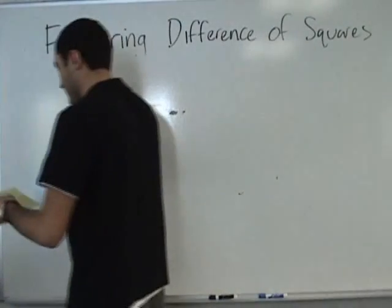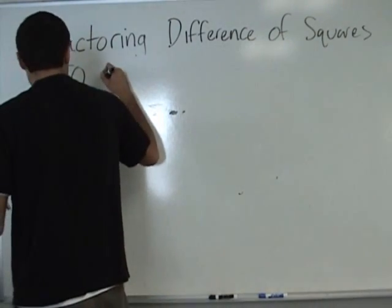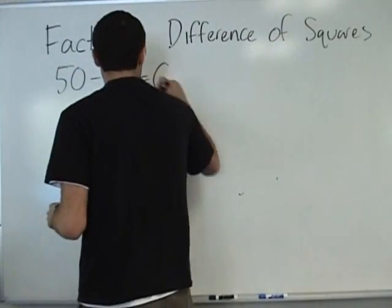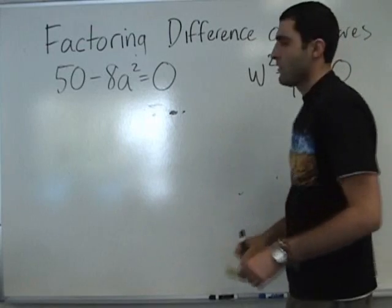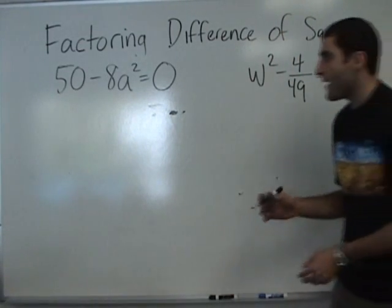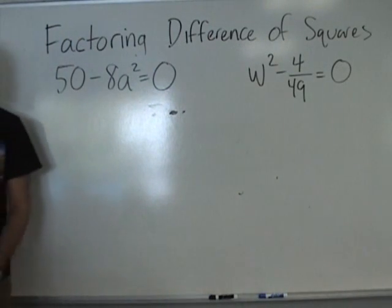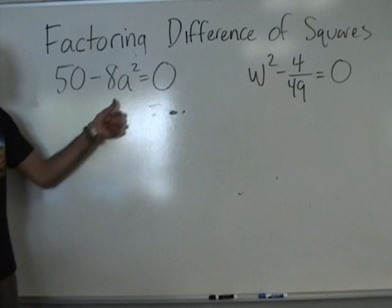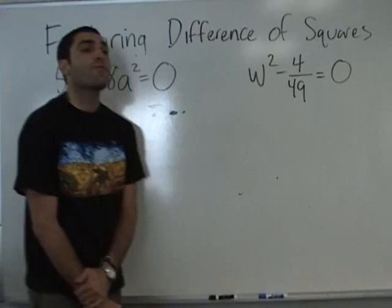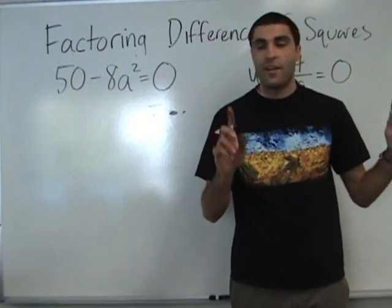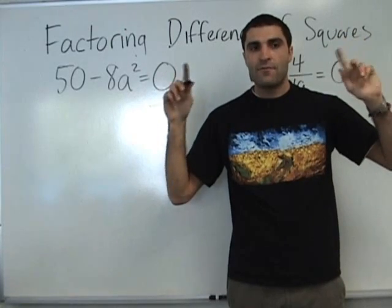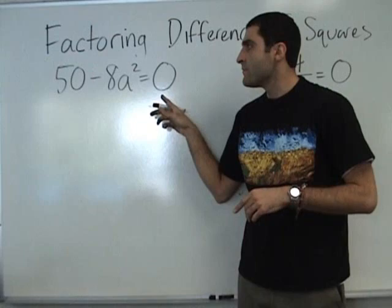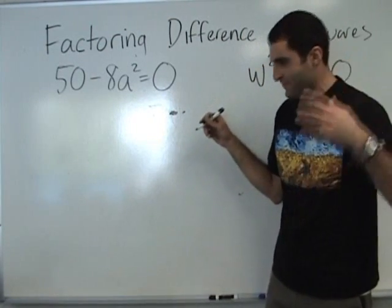Two more problems. 50 minus 8a squared equals 0, and w squared minus 4 over 49 equals 0. Is 50 minus 8a squared a difference of squares? 50 is not a perfect square. What times what is 8a squared? 4a times 2a — but that's not a perfect square. So what was the first step in factoring always? Look for the common factor. Is there one here? Two.